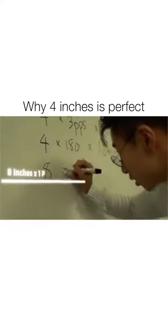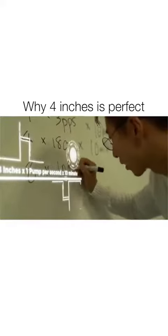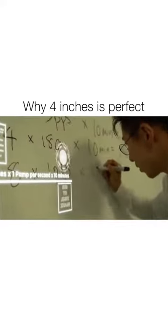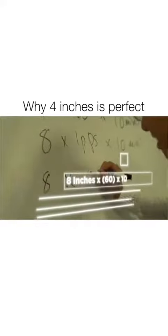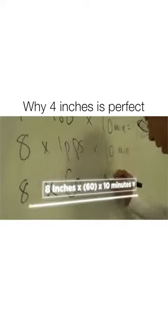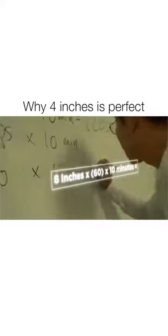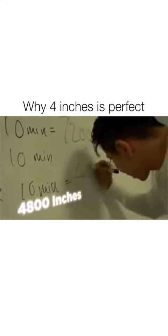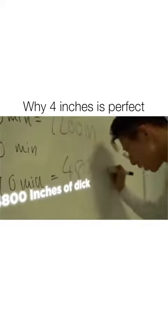So 8 inches times one pump per second for 10 minutes. 8 times 60 pumps per minute for 10 minutes. That's 4,800 inches of dick.